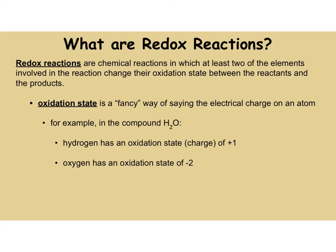Redox reactions are chemical reactions in which at least two of the elements involved in the reaction change their oxidation state. What that means is their electric charge. A species in the reactants may have a different electrical charge in the products, and if that's the case, this reaction is considered a redox reaction.